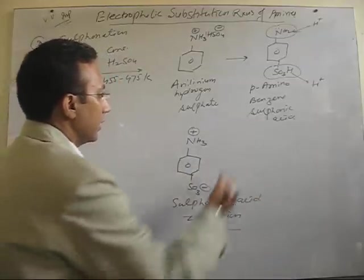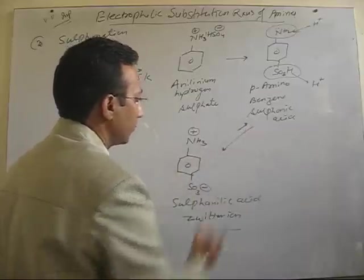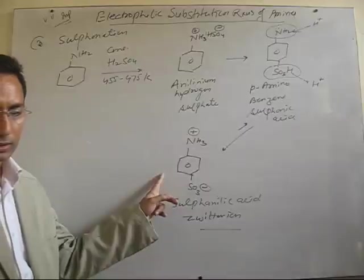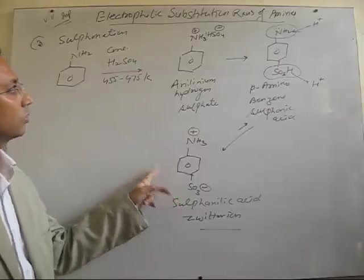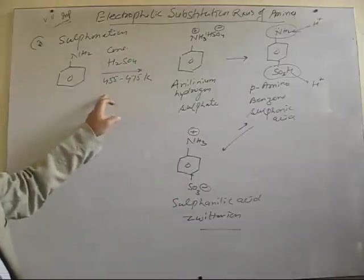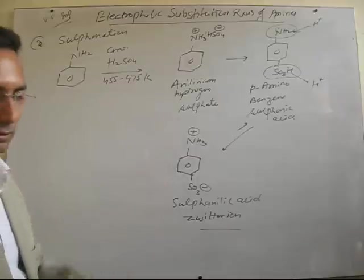So, there exists an equilibrium like this, more towards the zwitterion formation. So, this is how it is very important sulfonation in which zwitterion formation takes place.